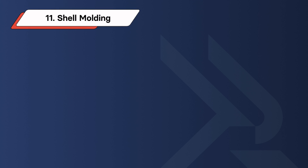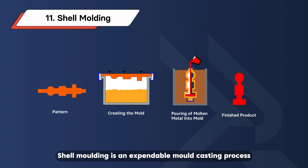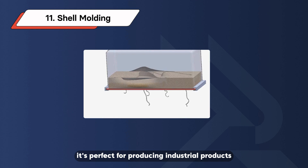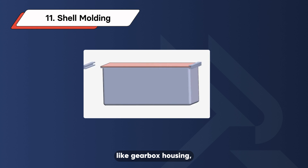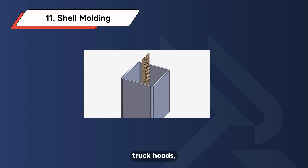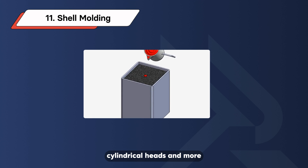Shell Molding. Shell molding is an expendable mold casting process that uses a finer sand mixed with resin to create molds. It's perfect for producing industrial products like gearbox housing, connecting rods, truck hoods, cylindrical heads, and more.